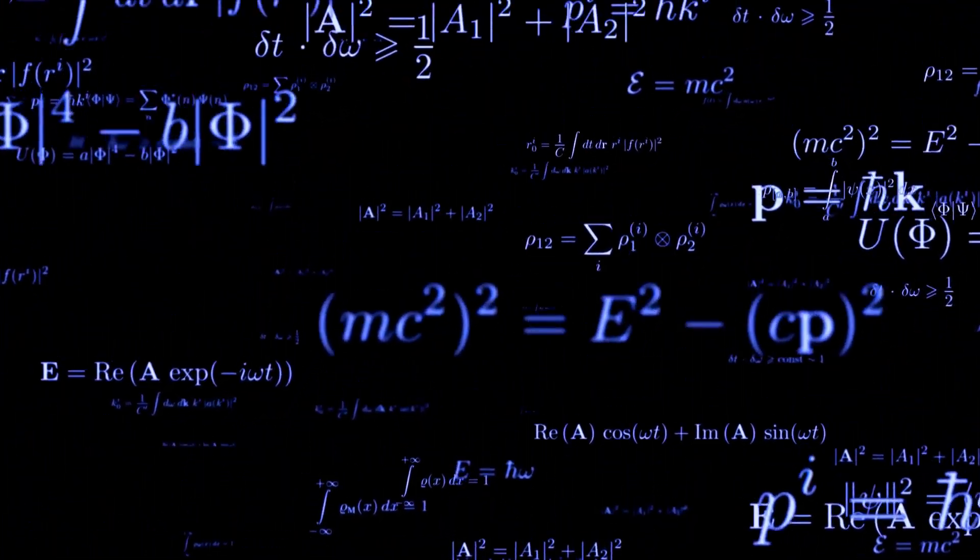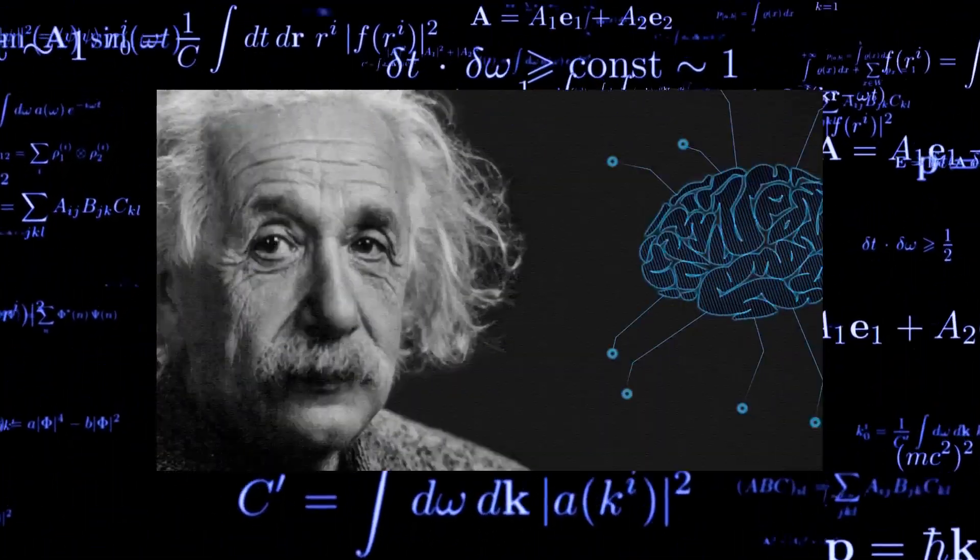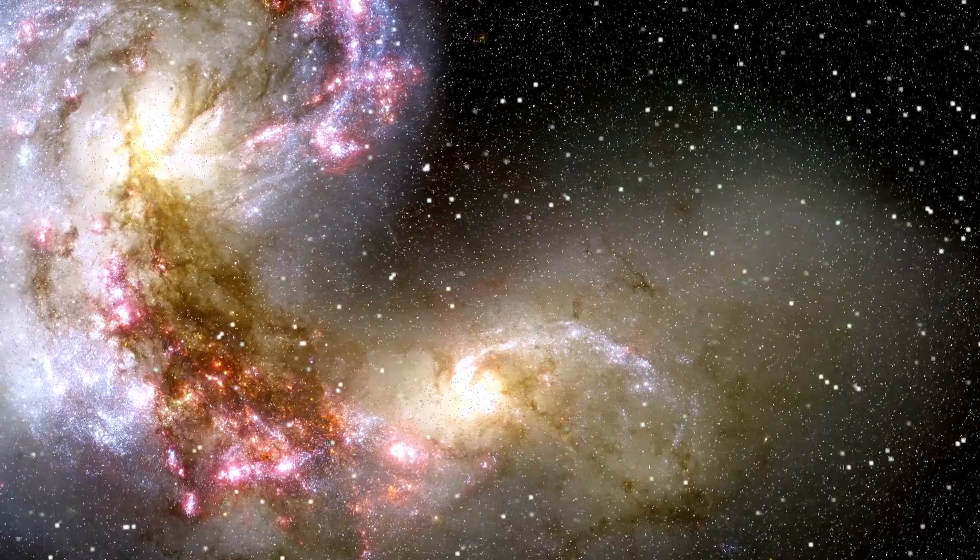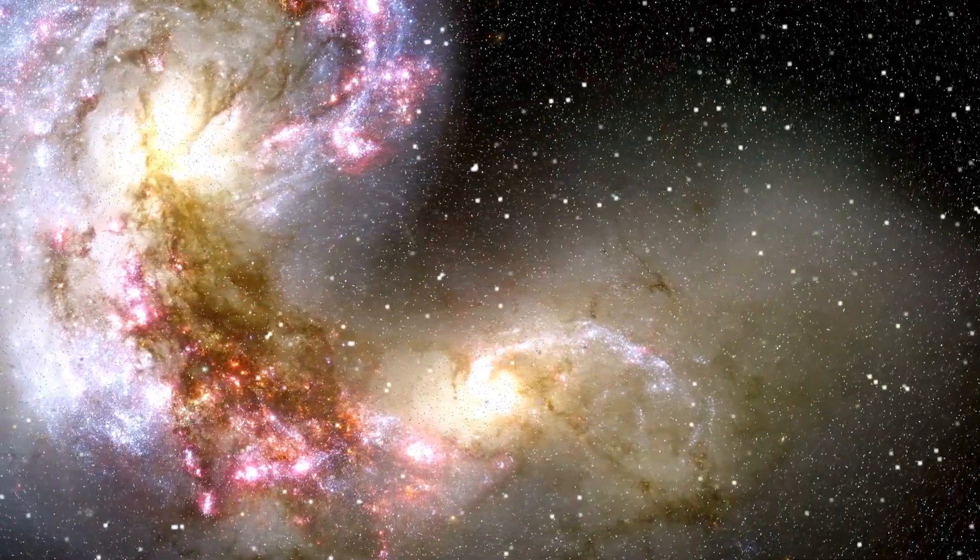This amazing discovery represents the first direct observation of light coming from inside a black hole. And guess who gets another confirmation of this theory? Albert Einstein and his revolutionary theory of general relativity, which predicted that light could be bent by gravity. This observation fulfills Einstein's prophecy, reaffirming the brilliance of his ideas.